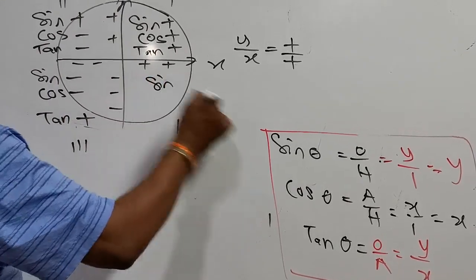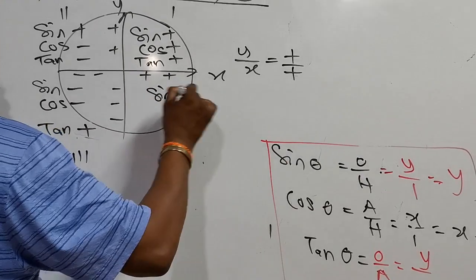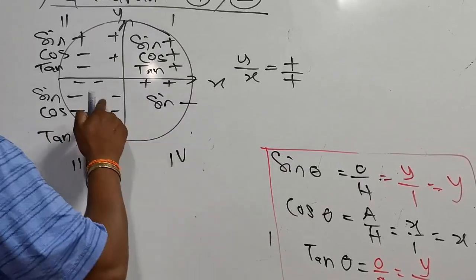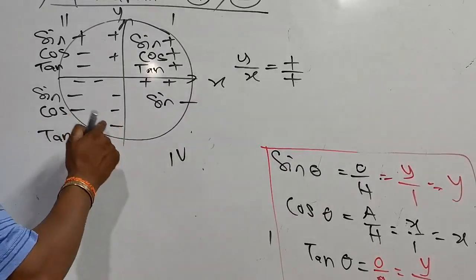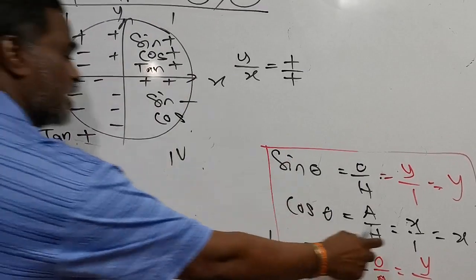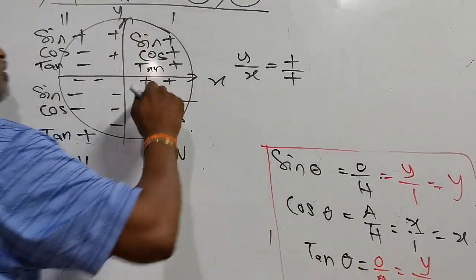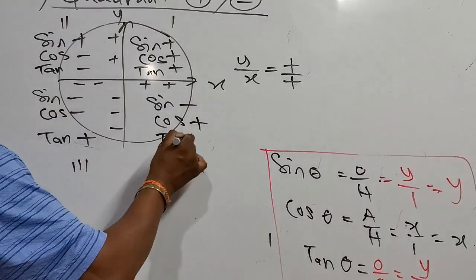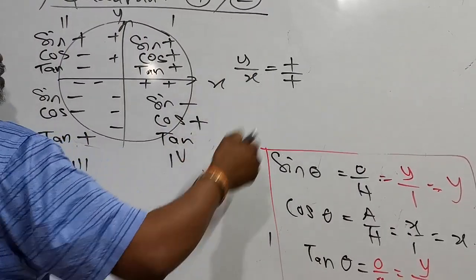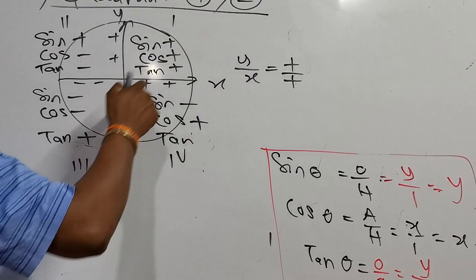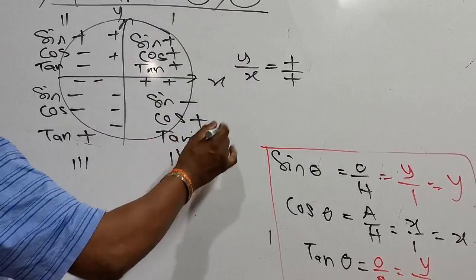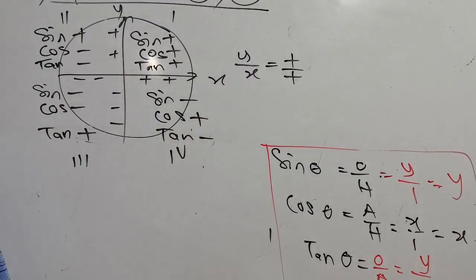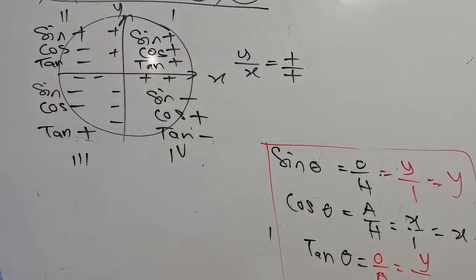In the second quadrant, tangent is y/x — y is positive, x is negative — so tangent is negative. Only sin is positive in the second quadrant. In the third quadrant: sin refers to coordinate Y which is negative, cos refers to coordinate X which is also negative. Tangent is y/x — negative divided by negative — so tangent is positive in the third quadrant. In the fourth quadrant: sin is negative, cos is positive, tangent is negative.